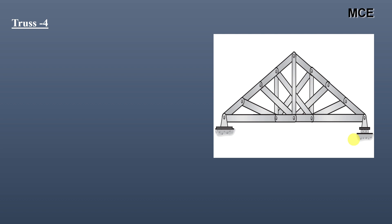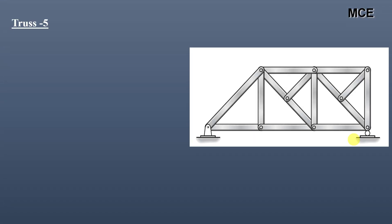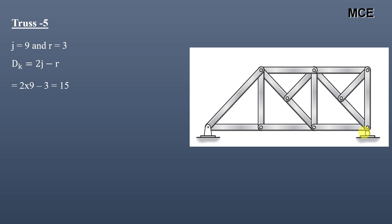For truss five, this truss has a total of nine joints and three support reactions — two at the pin support and one at the roller support. The value of dk for this truss is 15, meaning this truss has 15 degrees of freedom.